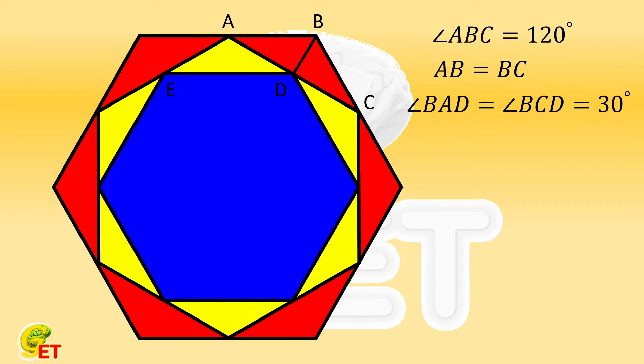For the same reason, in the triangle EAD, we can also obtain that the angle EAD is equal to 120 degrees, and the angle AED is equal to the angle ADE, both equal to 30 degrees. So triangle ABC and triangle EAD are similar to each other.